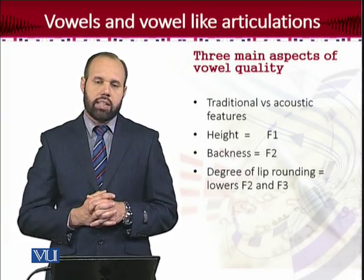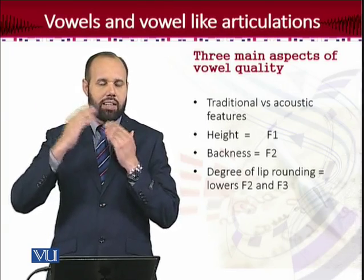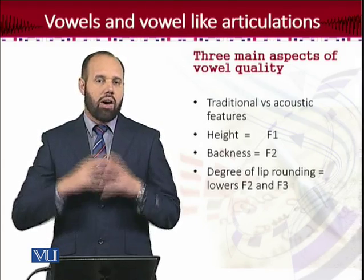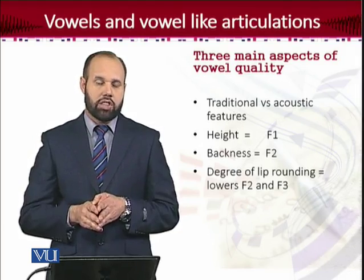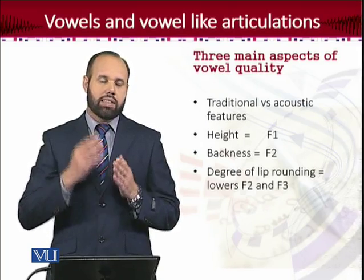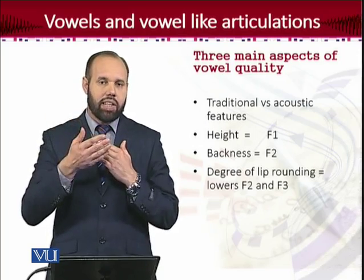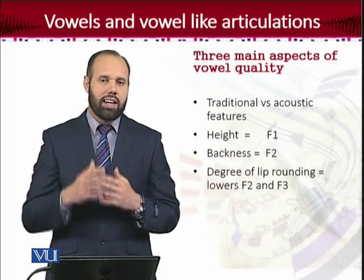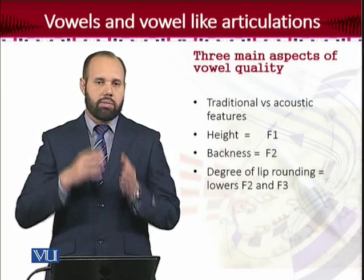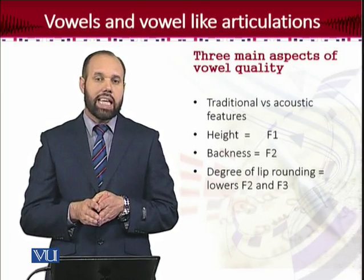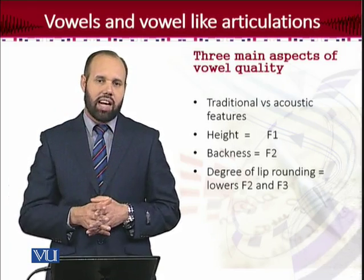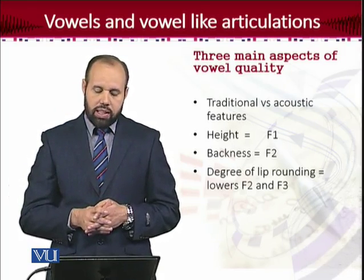We discussed that the front-back differences of the tongue are captured by F2. There is a positive relationship between F2 and the frontness or backness of the tongue — the more F2 is increased in value, the more the vowel is produced from the front part of the tongue. The maximum F2 was found through the sample of American vowels in 'E', which showed maximum F2 corresponding to the front part of the tongue.